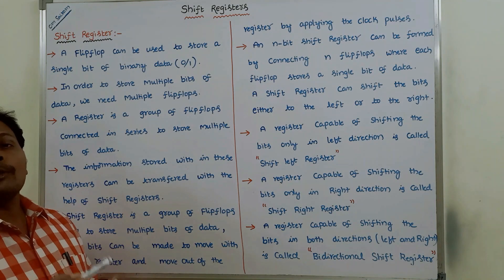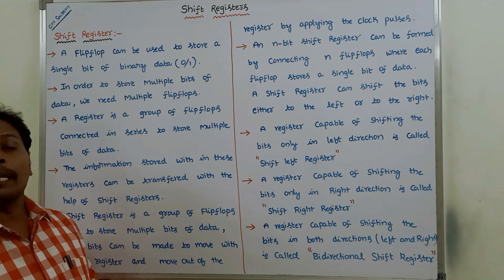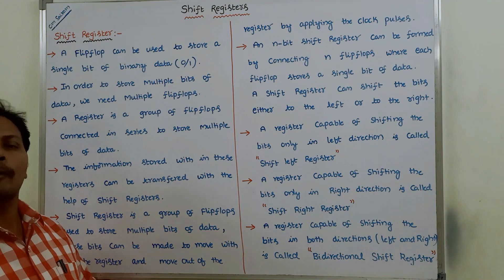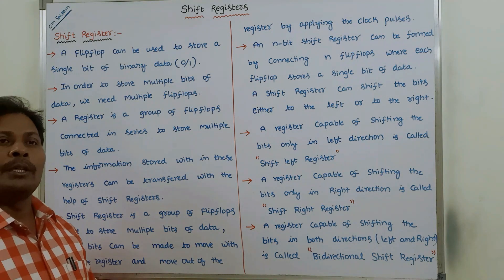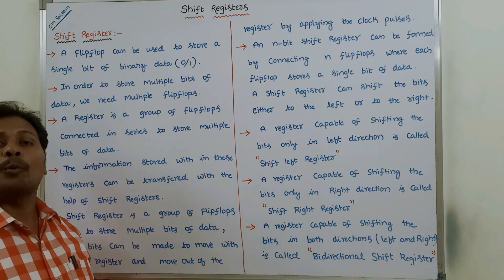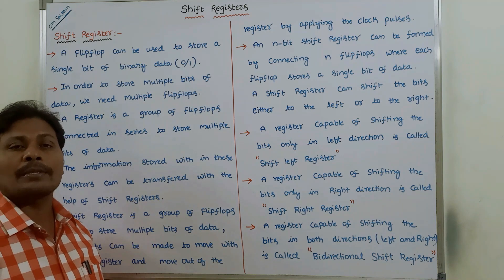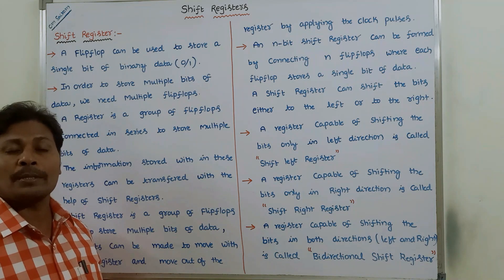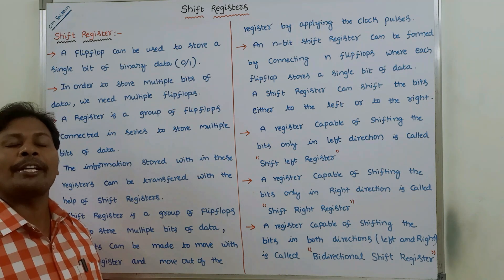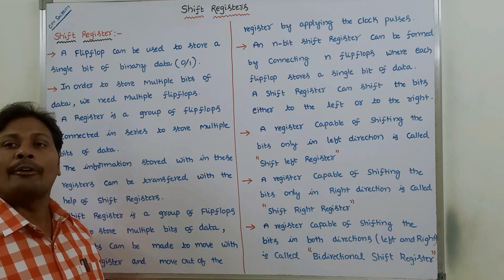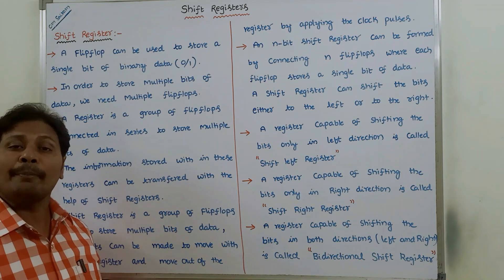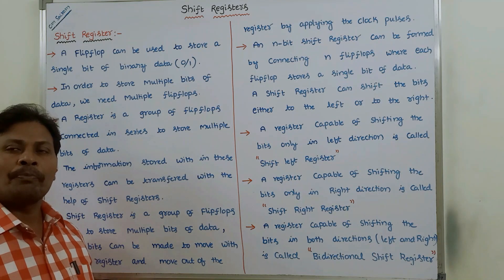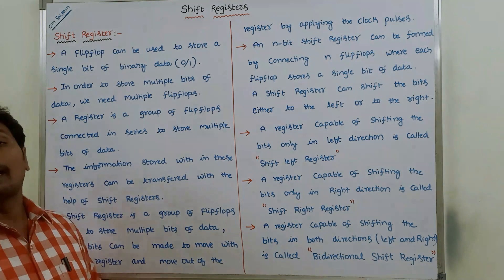Suppose we want to store multiple bits of data, we require multiple flip-flops. To store 2 bits we require 2 flip-flops, to store 3 bits we require 3 flip-flops, to store 4 bits we require 4 flip-flops, and to store n bits we require n number of flip-flops. Next is a register.